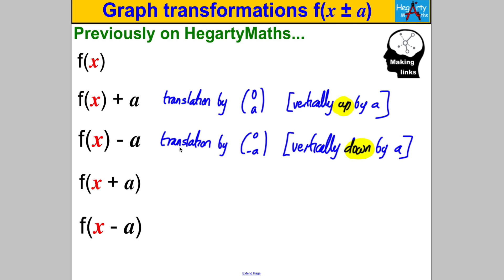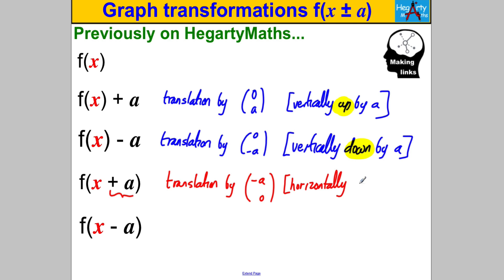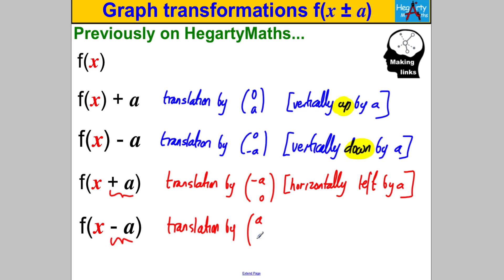So let's formalize what's going on. For f(x+a), we have a translation — it's in the horizontal direction but the opposite way to what you'd think. When you add a, you move the graph left by a units, so the translation vector is (-a, 0). For f(x-a), it's also a horizontal translation, but when you subtract a you move to the right by a units, giving a translation vector of (a, 0).